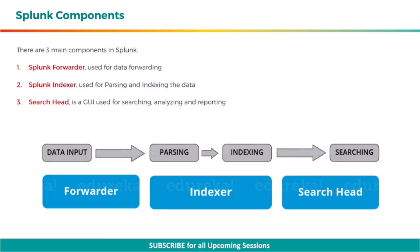Let's move to Splunk components. There are three main components in Splunk: the Splunk Forwarder, used for data forwarding; the Splunk Indexer, used for parsing and indexing the data; and the Search Head, which is a graphical user interface used for searching, analyzing and reporting.